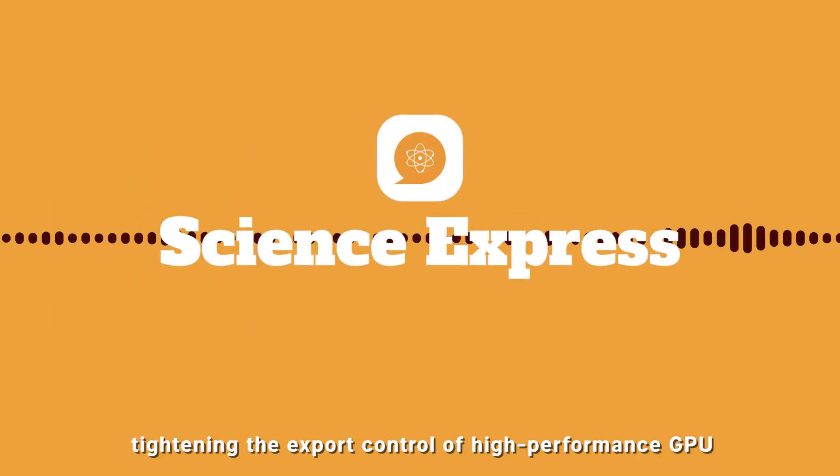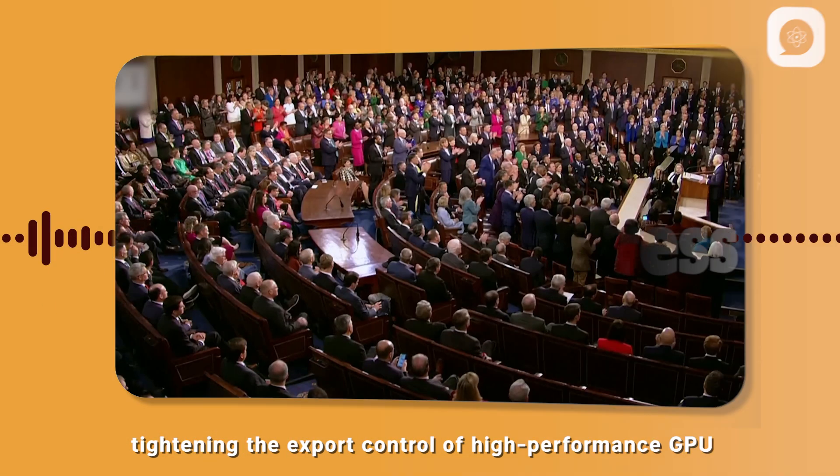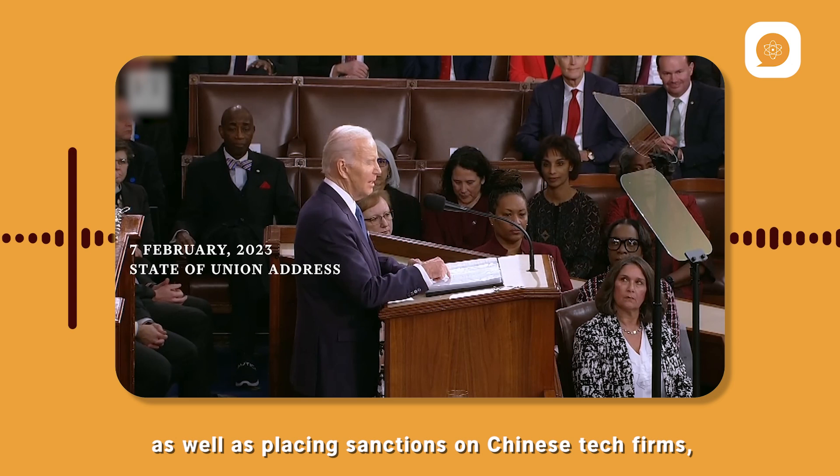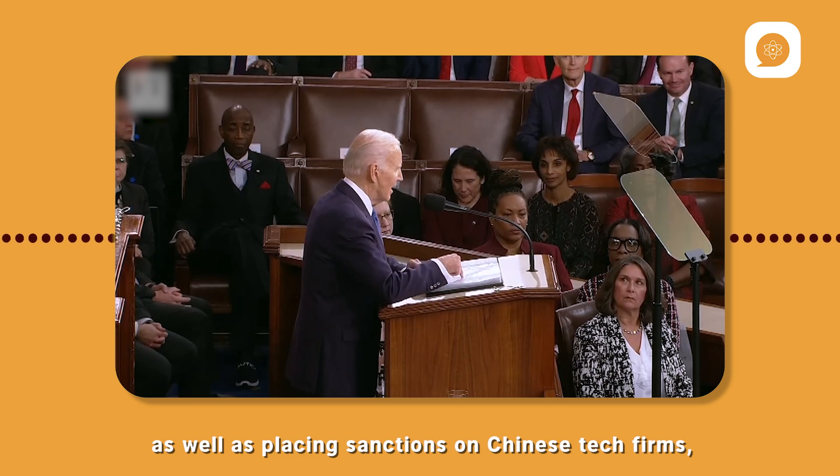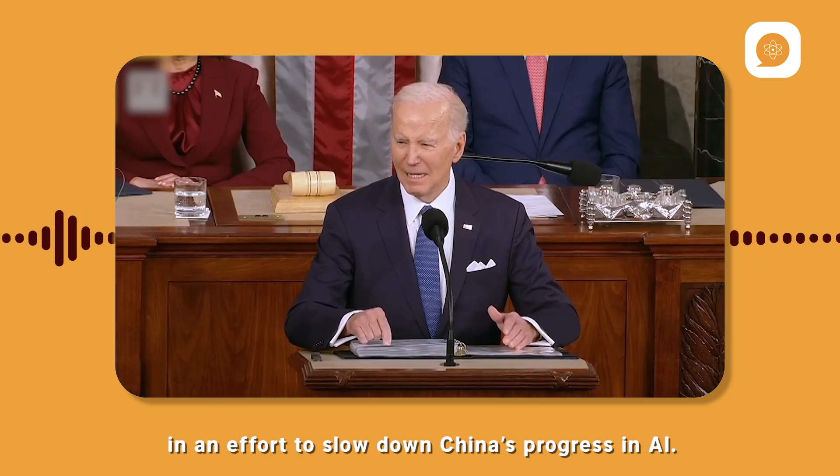The U.S. government has been tightening the export control of high-performance GPUs as well as placing sanctions on Chinese tech firms, in an effort to slow down China's progress in AI.